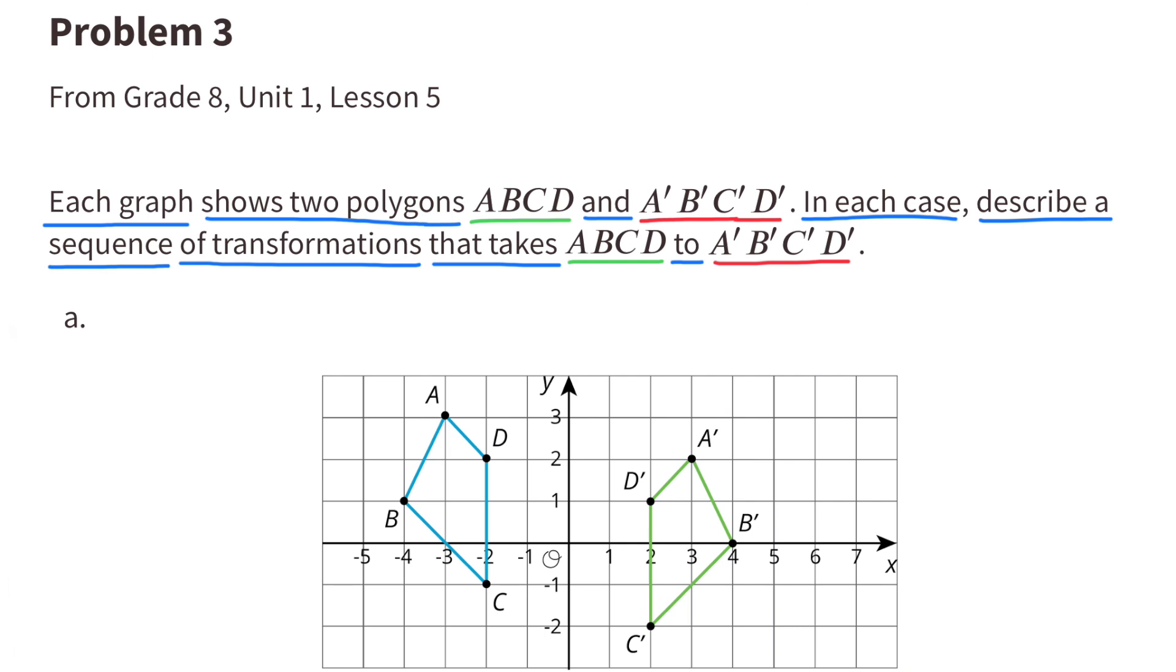To get from the first polygon to the second polygon, I would reflect ABCD over the y-axis and then translate down 1.